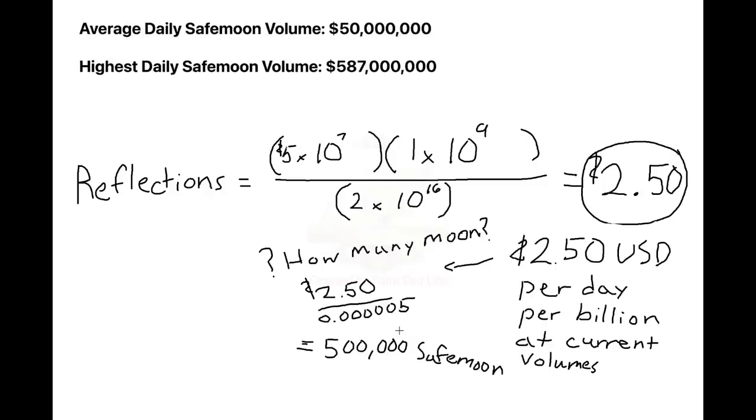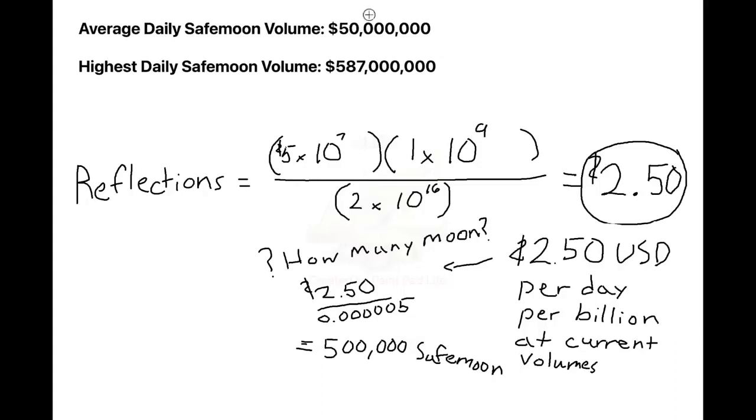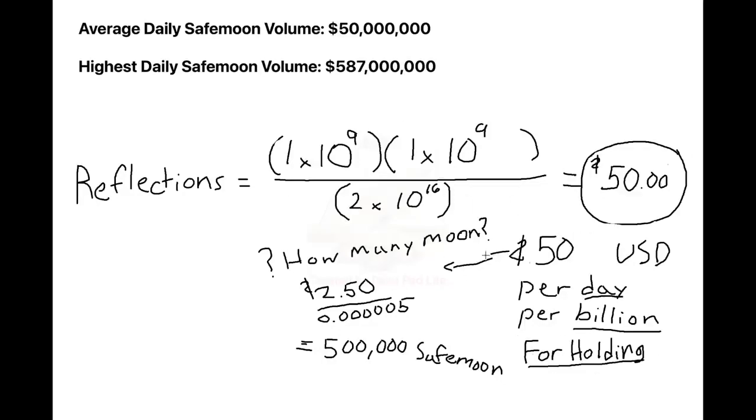At our all-time high, our volume reached as high as $500 million. For a top-tier coin, this is pitiful. Volumes in the billions are common for most coins, and I believe the difficulty in buying and selling SafeMoon has a lot to do with this gap. In the future, I believe we can easily see volumes of 1 billion plus. If we substitute in values, 1 billion for volume and 1 billion coins, we get 50 as our answer: 50 dollars per day, per billion coins that you own.